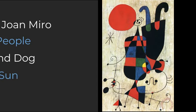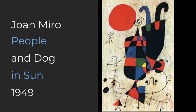This is the painting People and Dog and Son by Juan Miro in 1949. He liked to use very simple drawings and then add lots of detail with color and with whimsical shapes like stars and circles.